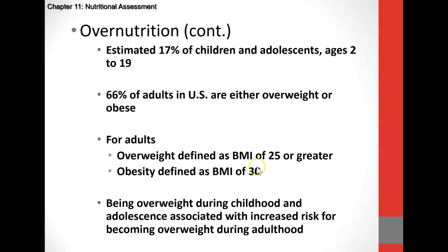I'm more concerned with you knowing the BMI ranges. If I give you a person's weight, height, and BMI value, you should know the category. For instance, a BMI of 17 indicates that individual is underweight. Most of the time, people use a chart to assess BMI based on height and weight.